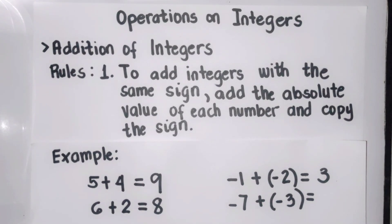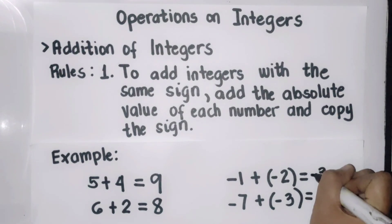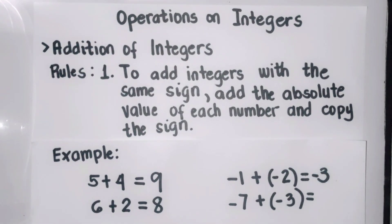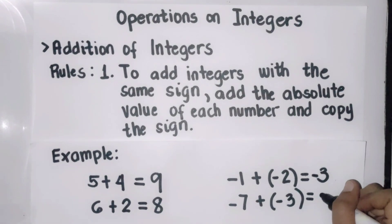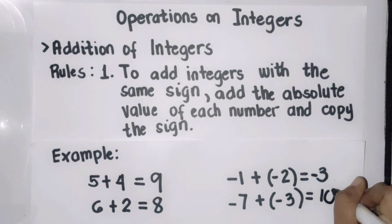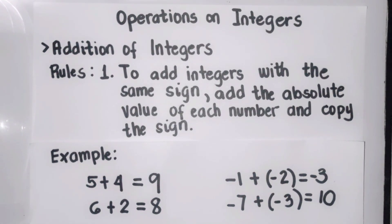Since they are both negative, we should copy their sign. Another example: negative seven plus negative three. The absolute value of negative seven is seven, and the absolute value of negative three is three. Seven plus three is ten. Then we should copy their sign, which is negative.